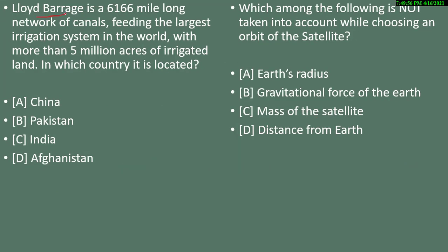Seventh question: Lloyd Barrage is a 6,166-mile long network of canals feeding the largest irrigation system in the world, covering more than 5 million acres of irrigated land. Which country is this located in? Options are China, Pakistan, India, or Afghanistan. The correct answer is Pakistan.